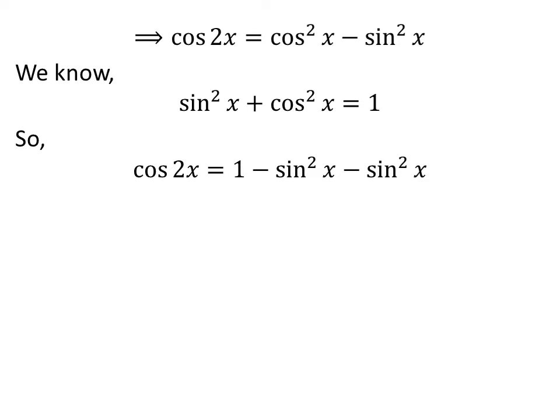Thus, cosine of 2 times x is equal to 1 minus square of sine of x minus square of sine of x.